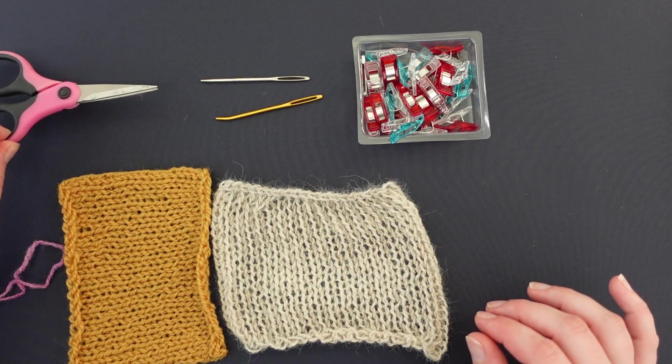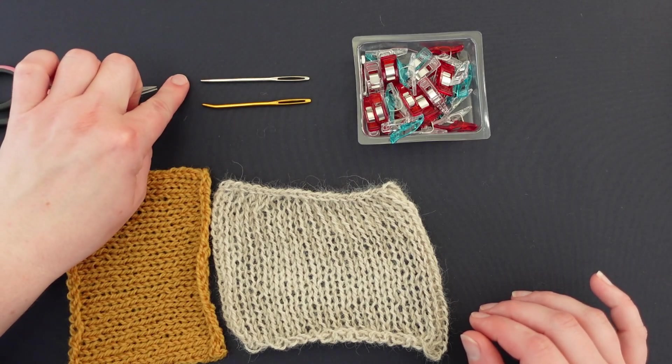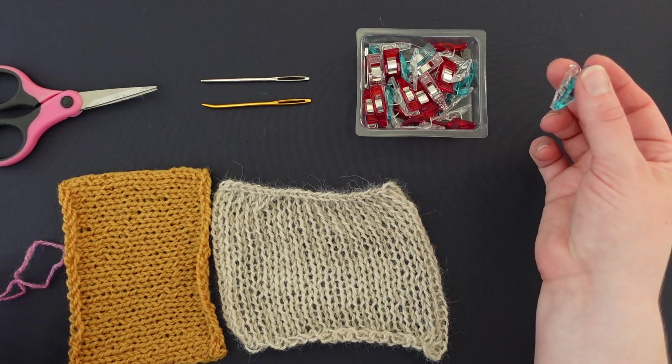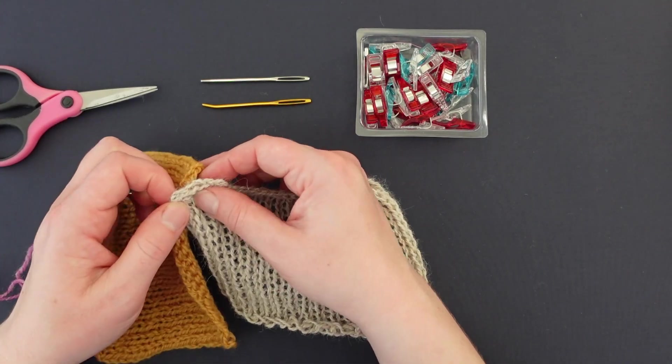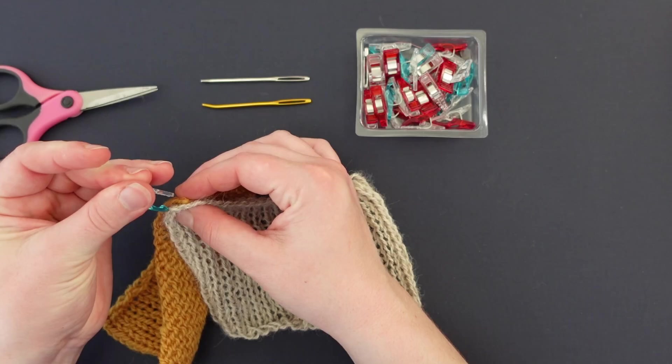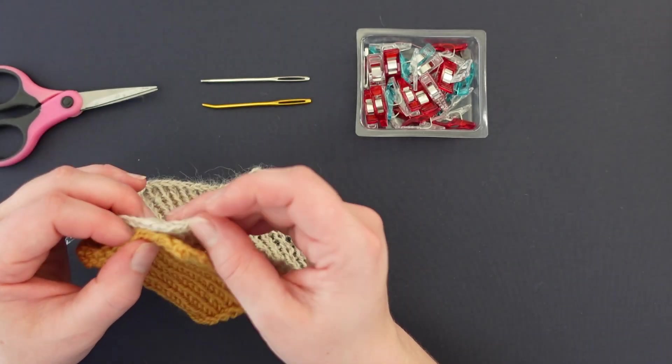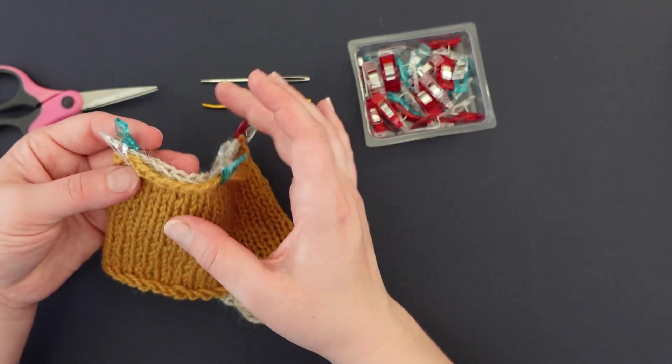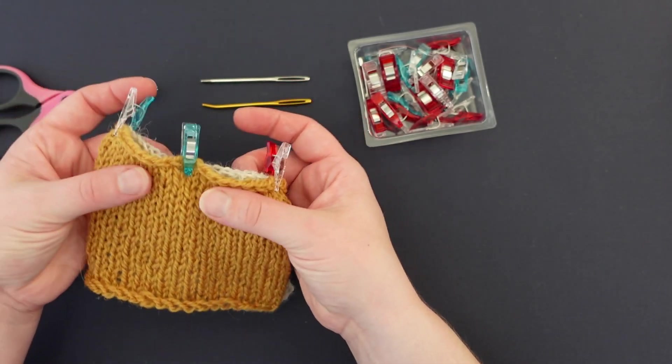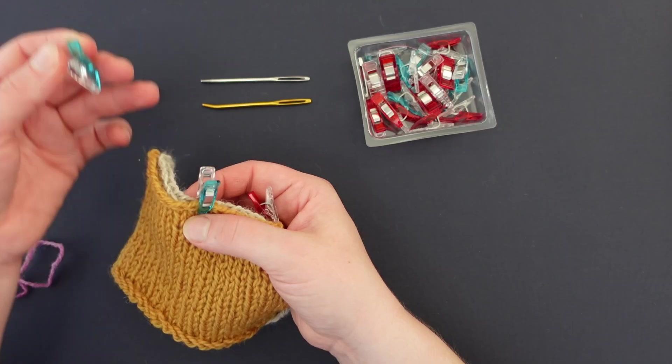A pair of scissors is really helpful. Either a straight or a bent tapestry needle. And optional but not needed are these little clips. If you're using the clips, basically what you're doing is you're just joining them at critical points and then as you seam you're making sure that things are lining up the way that you have pinned them out.